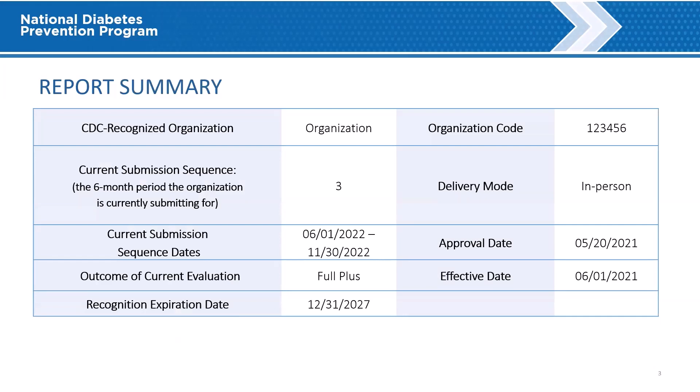Report Summary. The first section of every report is the report summary. Here, the organization will see their org code, delivery mode, approval date, effective date, current evaluation sequence number — which is the number associated with the 6-month period the organization is submitting data for — the current submission sequence date range, the outcome of the current evaluation, and the recognition expiration date.